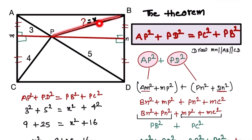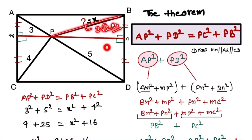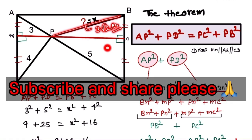The value of PB is x = 3√2. Thank you so much for watching. If you like the video, please subscribe to our channel and share it with your friends.